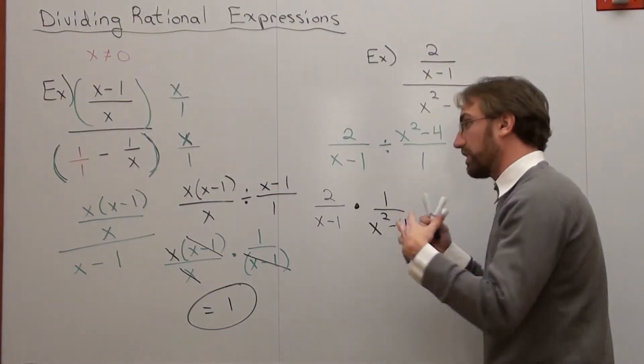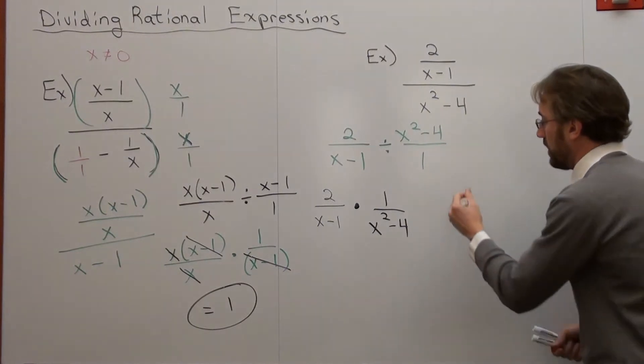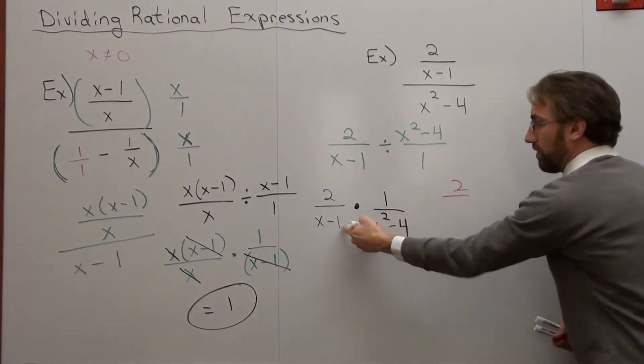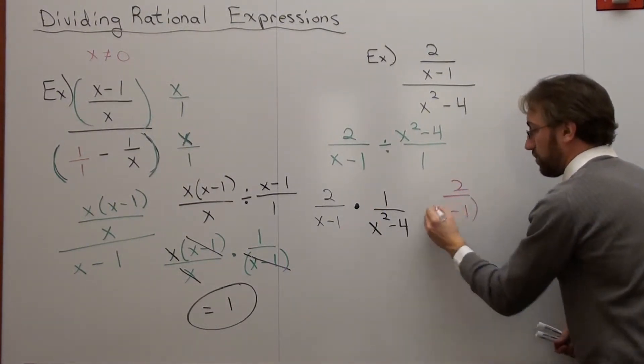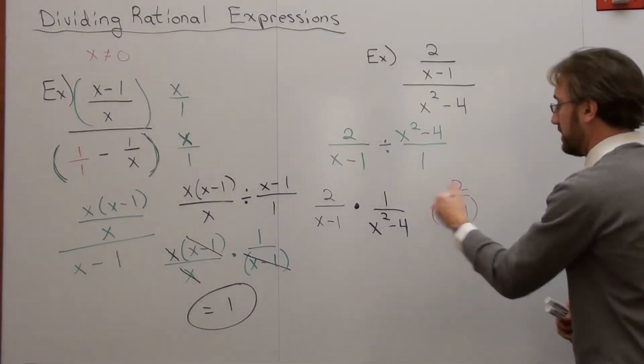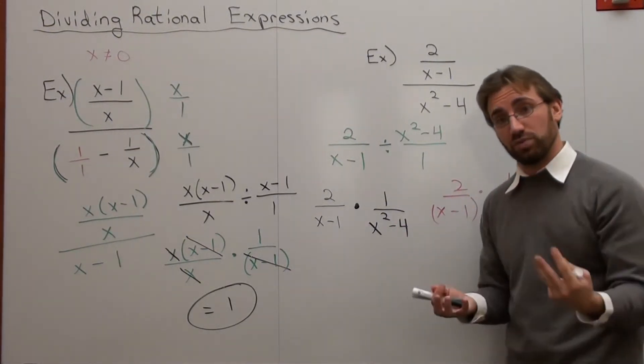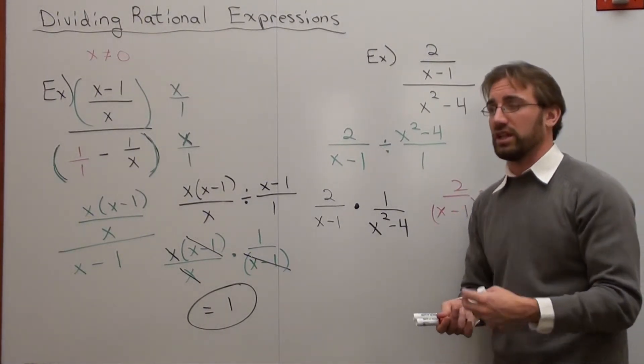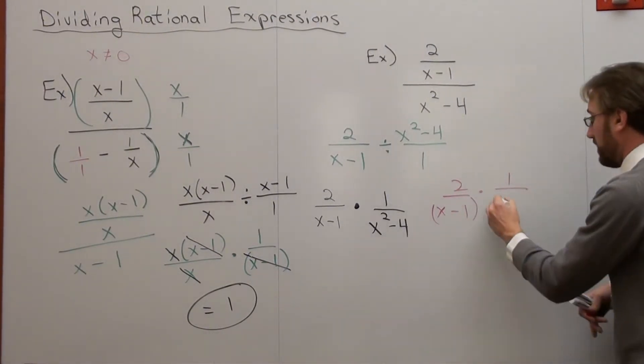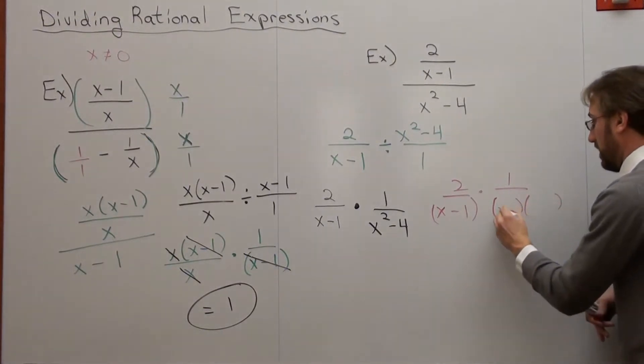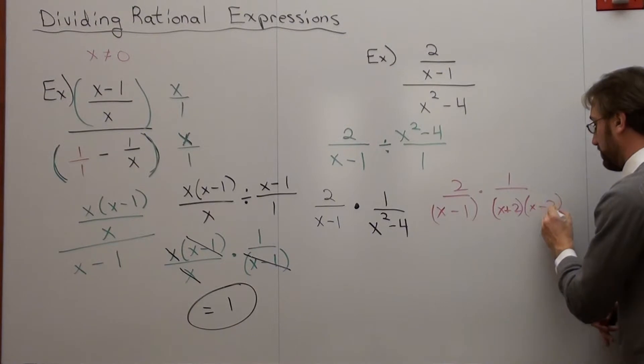You want to end up factoring it if you can. So, I have 2 over x minus 1. We'll put that in parentheses because it's actually a whole quantity, times 1 over x squared minus 4 is the difference of 2 perfect squares. If you don't remember that, look at the factoring section. That's factoring special products. That factors into x plus 2, x minus 2.